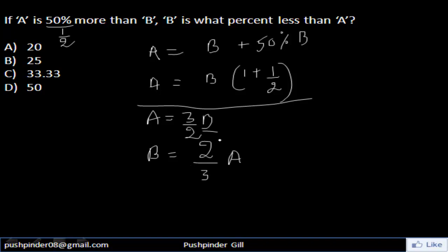Now from here, if you convert this fraction into percentage, you just have to multiply it by 100 and from this you can say that B equals 66.66% of A.